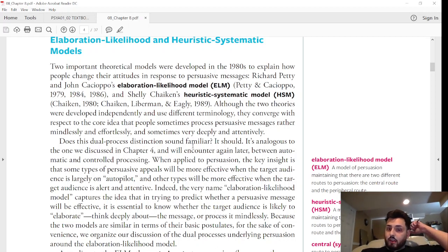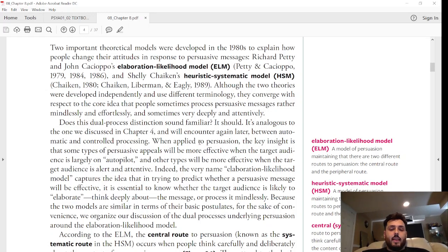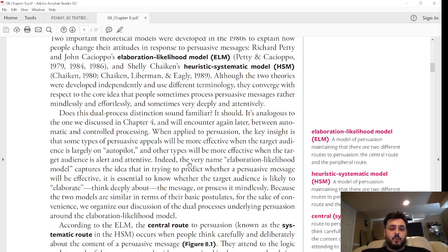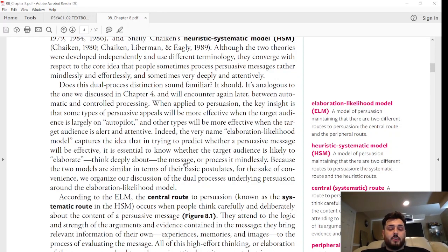Does this dual process distinction sound familiar? It's analogous to the one we discussed in a previous chapter between automatic and controlled processing. When applied to persuasion, the key insight is that some types of persuasive appeals will be more effective when the target audience is largely on autopilot, and other types will be more effective when the target is alert and attentive. The very name 'elaboration likelihood model' captures the idea that in trying to predict whether a persuasive message will be effective, it is essential to know whether the target audience is likely to elaborate—think deeply about the message or process it mindlessly.